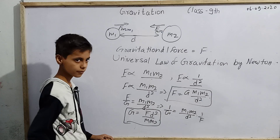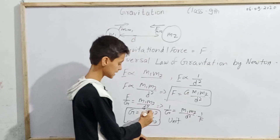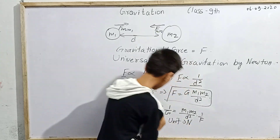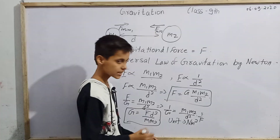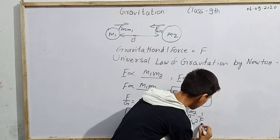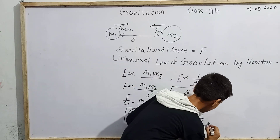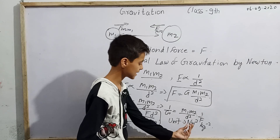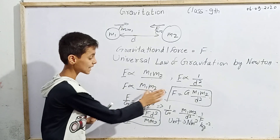From G = F d squared / (m1 m2), the unit of G is: force in Newton, d squared gives meter squared, and m1 times m2 gives kg squared in the denominator. So the unit of G is Newton meter squared per kg squared, written as N m² kg⁻².